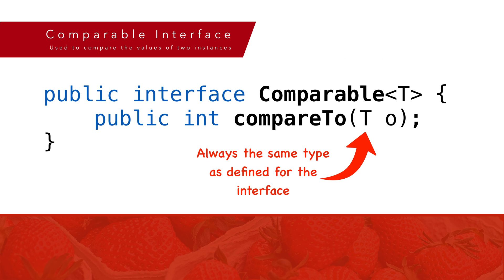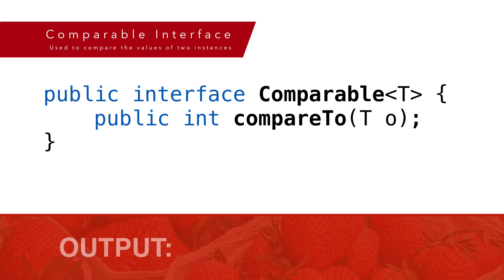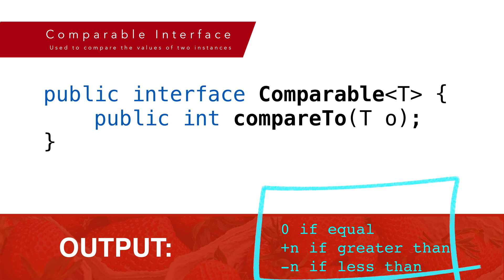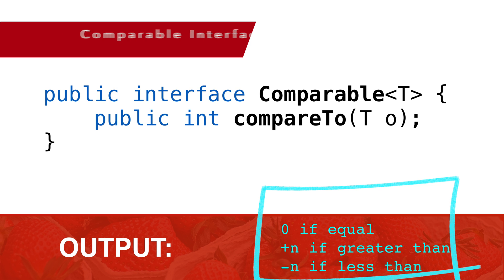The Comparable interface expects a method with the same signature as compareTo. The parameter is always the same as the object type. In the Integer class, compareTo expects another integer. The method returns 0 if they're equal, a negative number if the integer is smaller than the integer provided as a parameter, and a positive number if the integer is greater. This is used in the sort method for most collections. We call sort, and the collection will sort the group of objects using the compareTo method.